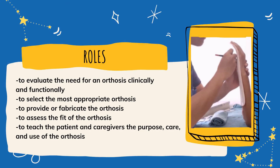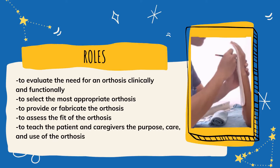The roles of occupational therapists include: first, to evaluate the need for an orthosis clinically and functionally; second, to select the most appropriate orthosis; third, to provide or fabricate the orthosis; fourth, to assess the fit of the orthosis; and lastly, to teach the patient and caregivers the purpose, care, and use of the orthosis.